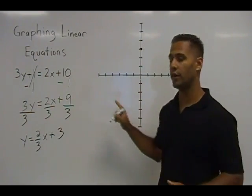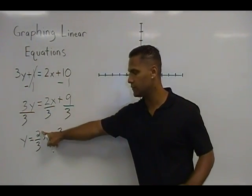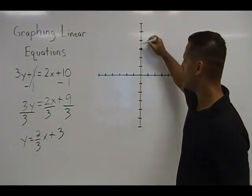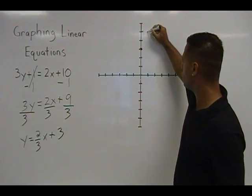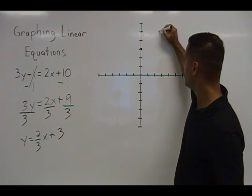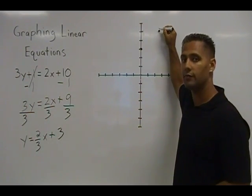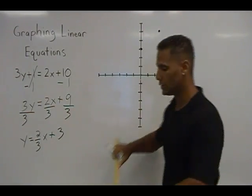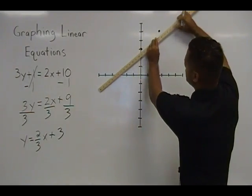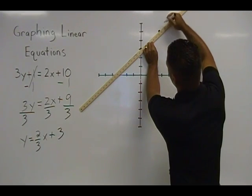From that point we are going to look at our slope, which has a rise of 2 and a run of 3. So I am going to go up 1, 2 and over 1, 2, 3, then make a point. After you have 2 points that the line passes through, you can simply take a ruler or a straight edge, connect those 2 points together and make a straight line.